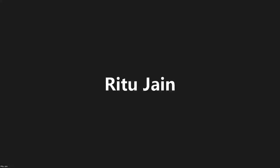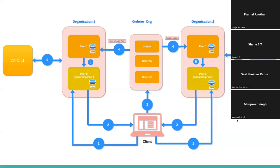I'm sharing my screen — you can see me, right? Let's consider we have two different organizations that want to have communication in a distributed way. As per the diagram, two peer organizations are there, each holding some peers. One of them is the endorsing peer. In the other organization the situation is exactly the same, and there's a dedicated certificate authority for each organization.